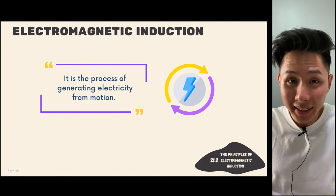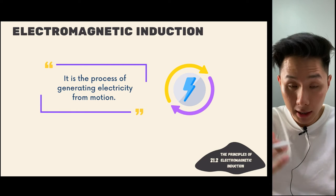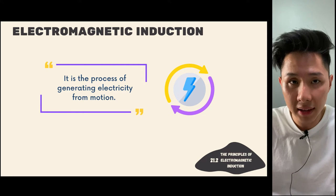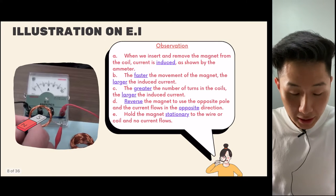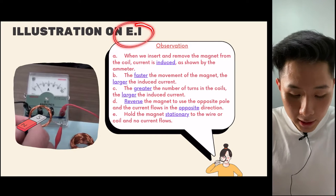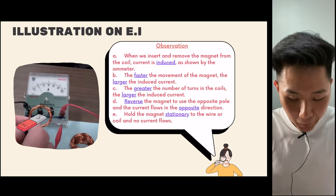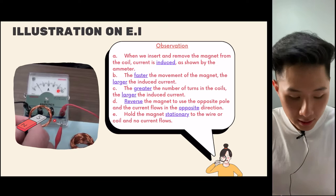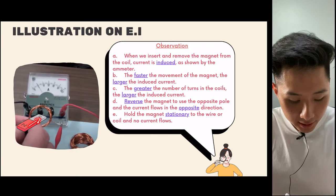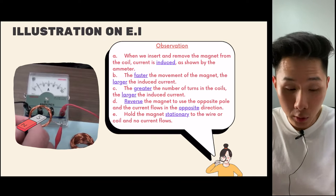The formal definition of electromagnetic induction is the process of generating electricity from motion — the reverse effect of what we learned in chapter 20. You can illustrate this in the science lab: prepare a coil of wire connected to an ammeter, insert a magnet into the coil, and you will see electricity is induced as shown by the deflection of the ammeter needle.